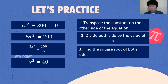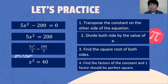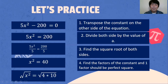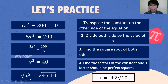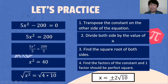Then find the square root of both sides, and find the factors of the constant where one factor should be a perfect square. As we can see, 4 times 10 equals 40, and 4 is a perfect square. The square root of X squared is X, and the square root of 4 is 2. So the final answer is X is equal to positive and negative 2 square root of 10, because 10 has no perfect square factor.